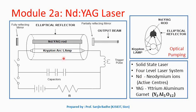This diagram shows the construction of the Nd:YAG laser. Here you can see one elliptical reflector. The Nd:YAG rod along with a krypton lamp is kept inside this elliptical reflector. The Nd:YAG rod is kept at one of the foci and the krypton arc lamp is kept at the other focus. The type of pumping used here is optical pumping, so the light emitted by the krypton arc lamp is utilized for exciting the neodymium ions from lower energy levels to higher energy levels.